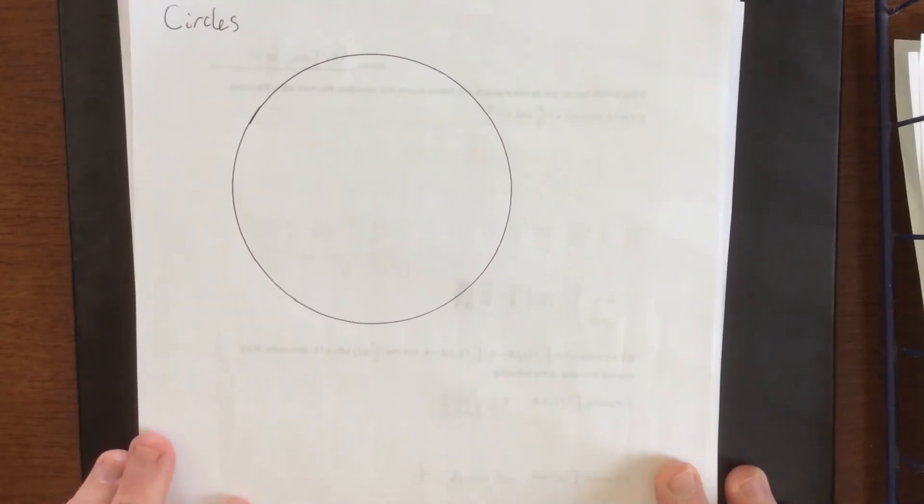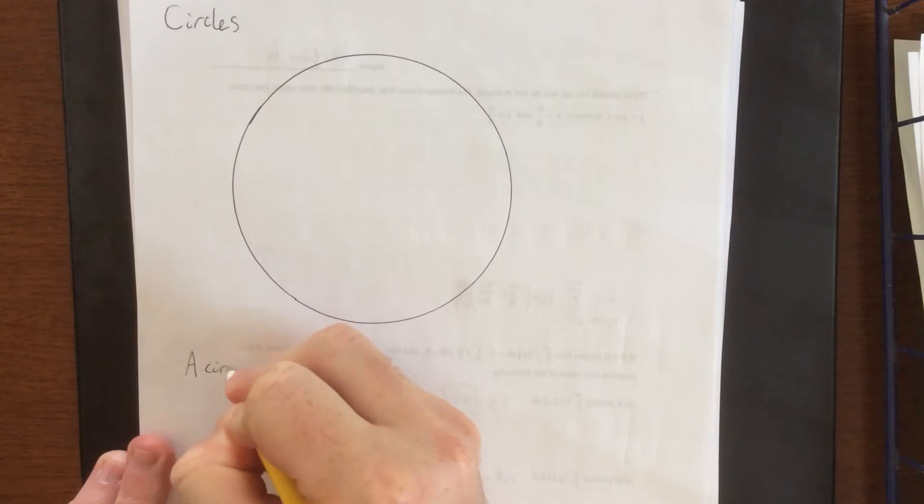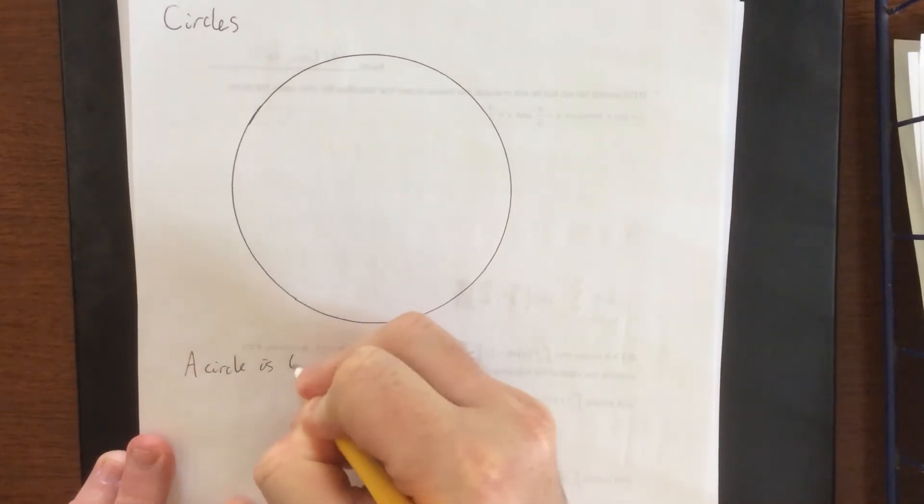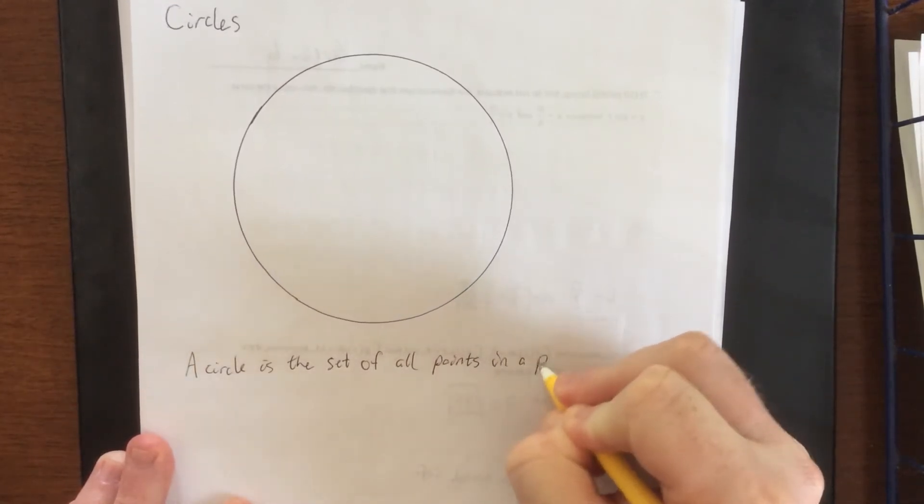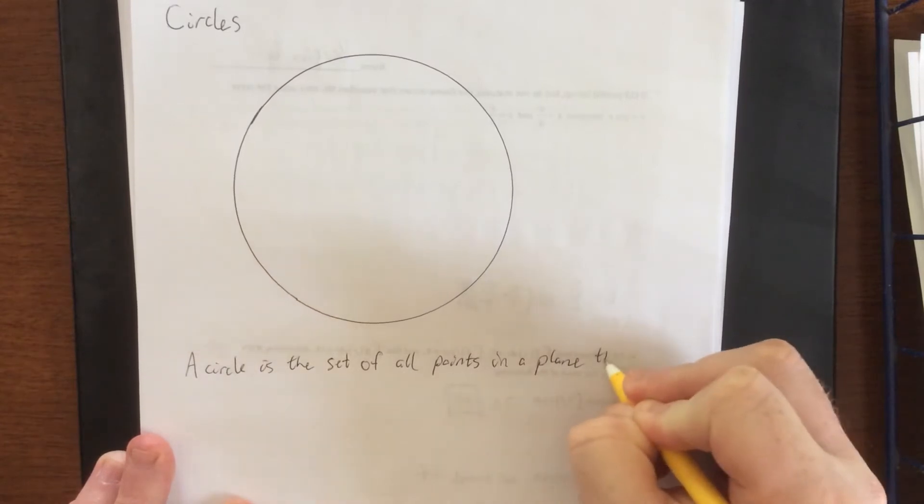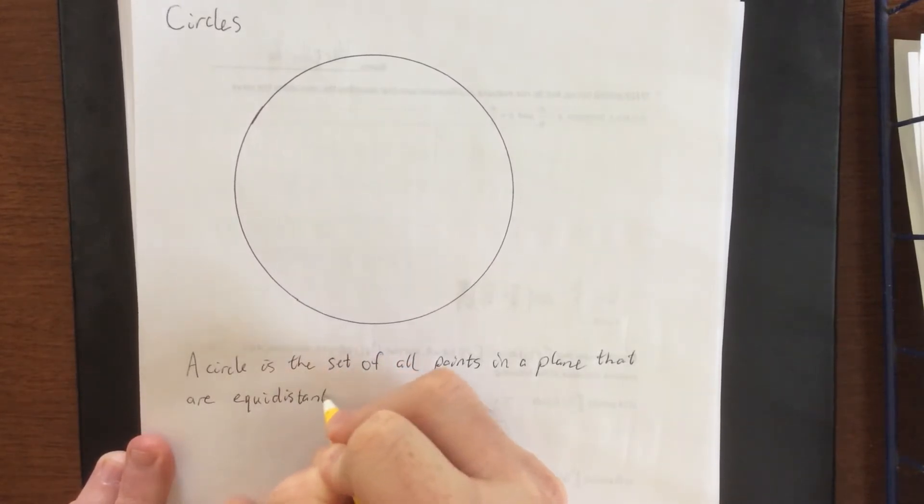The definition according to math is that a circle is the set of all points in a plane that are equidistant, that means the same distance, from a given point.